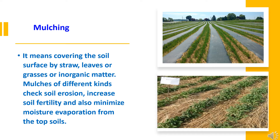In general, mulching means covering the soil surface by straw, leaves, grasses, or inorganic matter. Mulching of different kinds checks soil erosion, increases soil fertility, and also minimizes moisture evaporation from the topsoil.